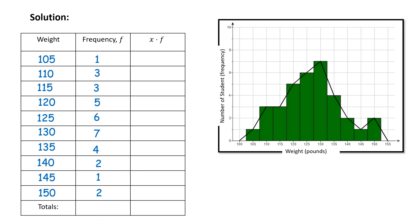Now the x dot f column. That means we take the data item, which is the weight, and multiply it to the frequency number. So 105 times 1, that's 105. 110 times 3, that's 330. 115 times 3, that will be 345. 120 times 5, that's 600. 125 times 6, that'll be 750. 130 pounds times 7 is 910. 135 times 4 is 540. 140 times 2 is 280, and then there's only one person that weighed 145 pounds, and two at 150, so that would be 300.